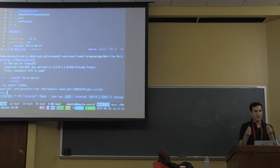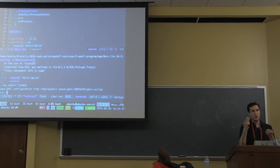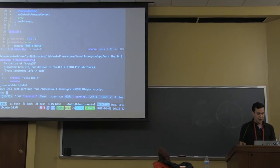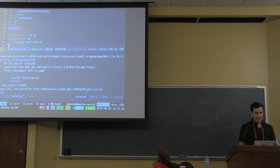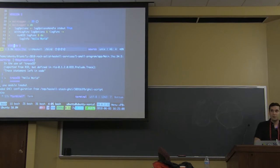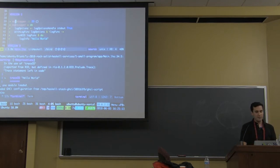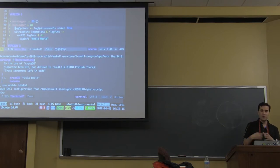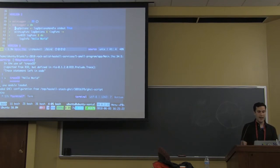In production you want logging information that has a level, has metadata you can follow, so you know where it's coming from, what level to filter on. Given this, Rio offers a logger included in the library, which is really nice. Starting with main logger, it's similar to the function we had before, but we have to build a logger and run a monad transformer that has the logger inside.